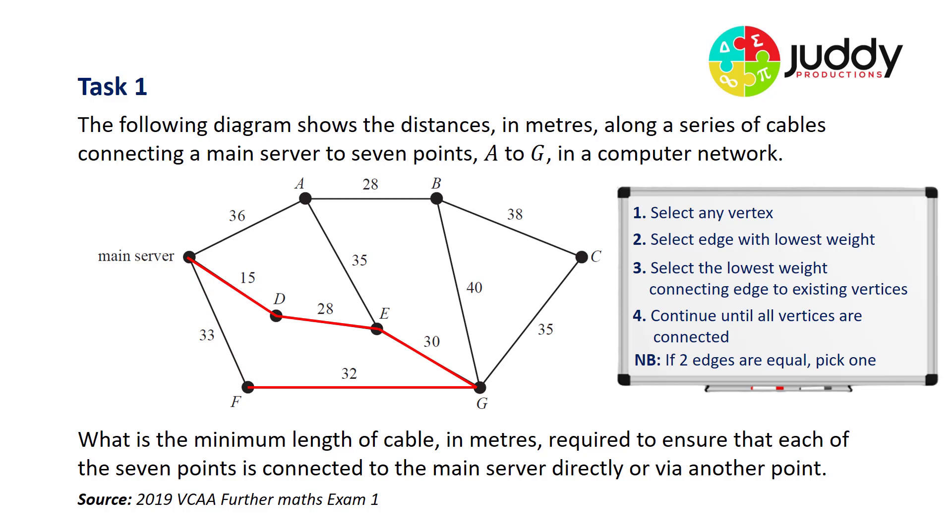And you'll notice I've got two 35s. I have this 35 and this 35. Note, if two edges are equal, simply pick one. So I'm picking this 35. I'm now looking at all the vertices available and I can now select the other 35. Of the vertices available now, the next lowest number is 28 up the top. So I'll pick that.